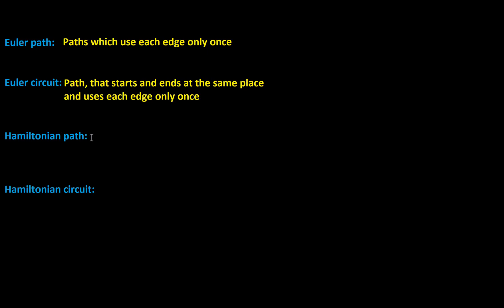Now, Hamiltonian paths and Hamiltonian circuits are a little bit different. They are really concerned about vertices and how many times we visit the vertices. For example, a Hamiltonian path would be a path which visits each vertex only once.